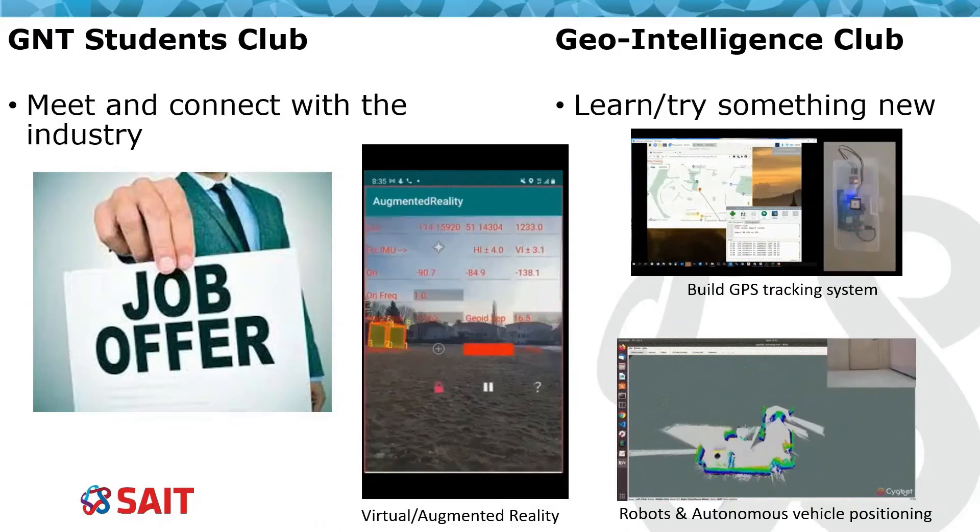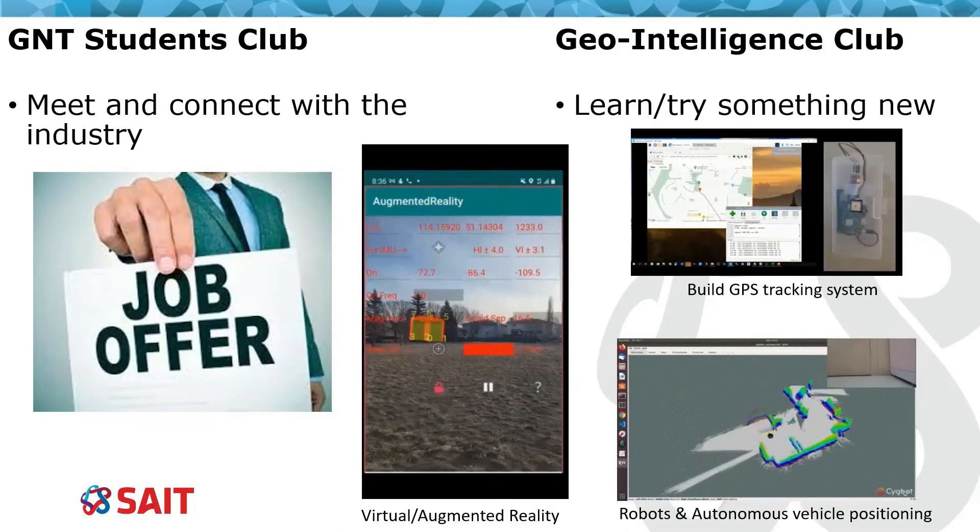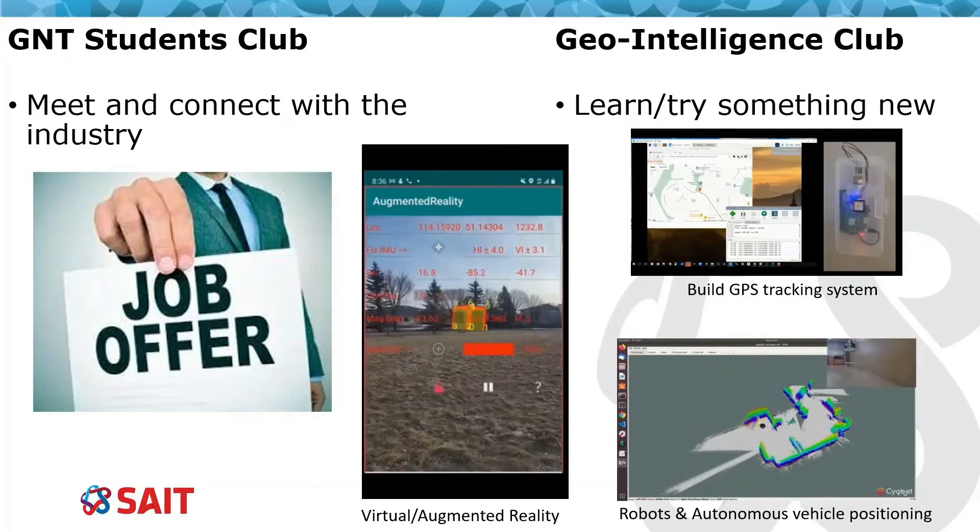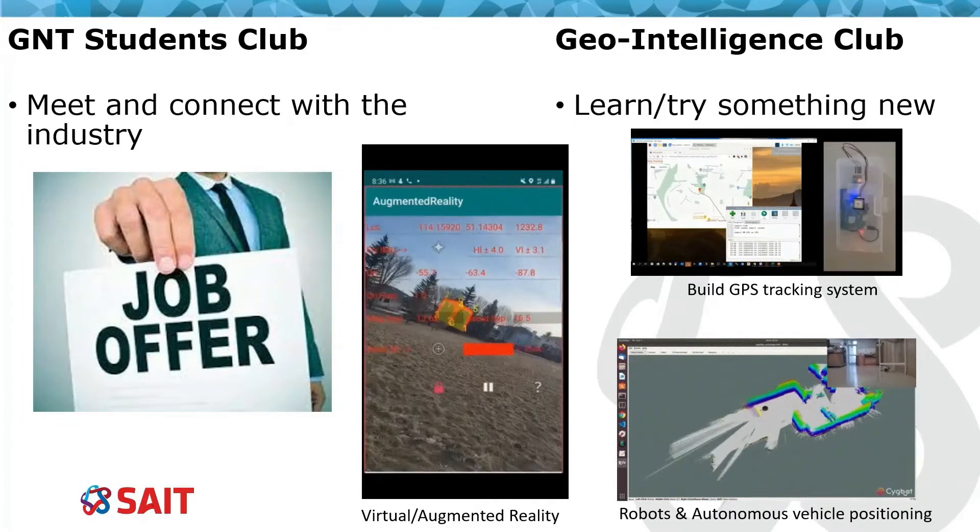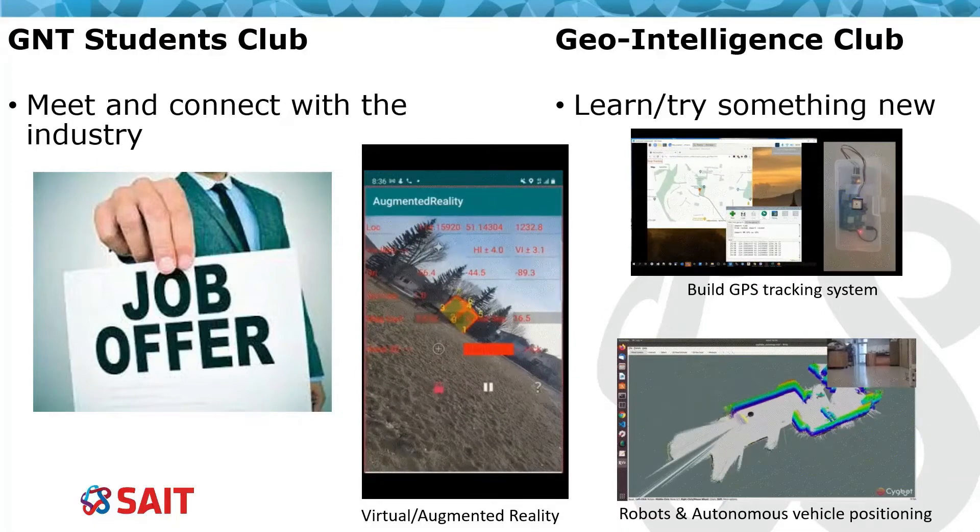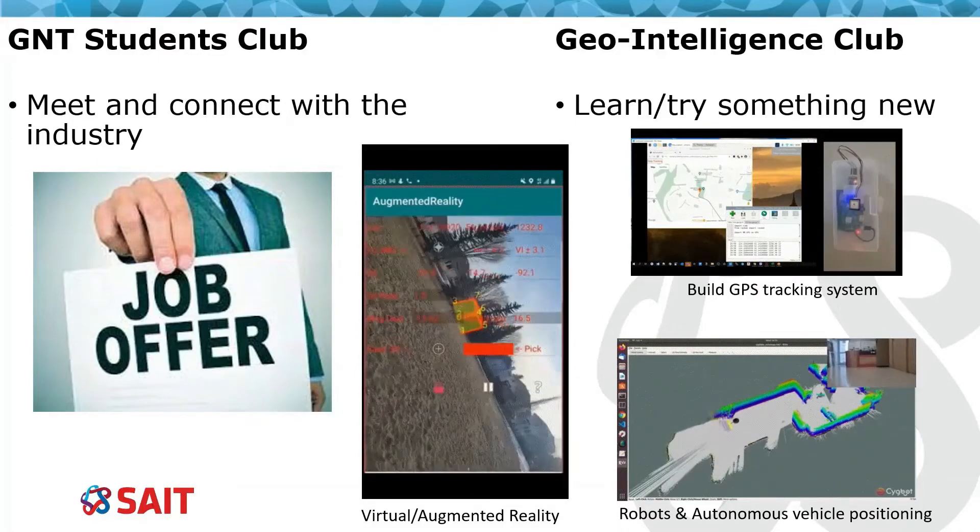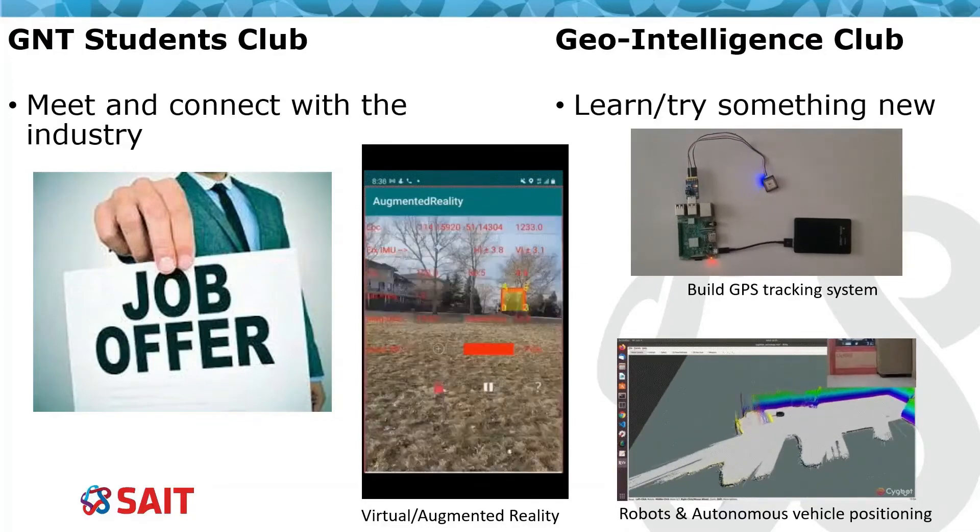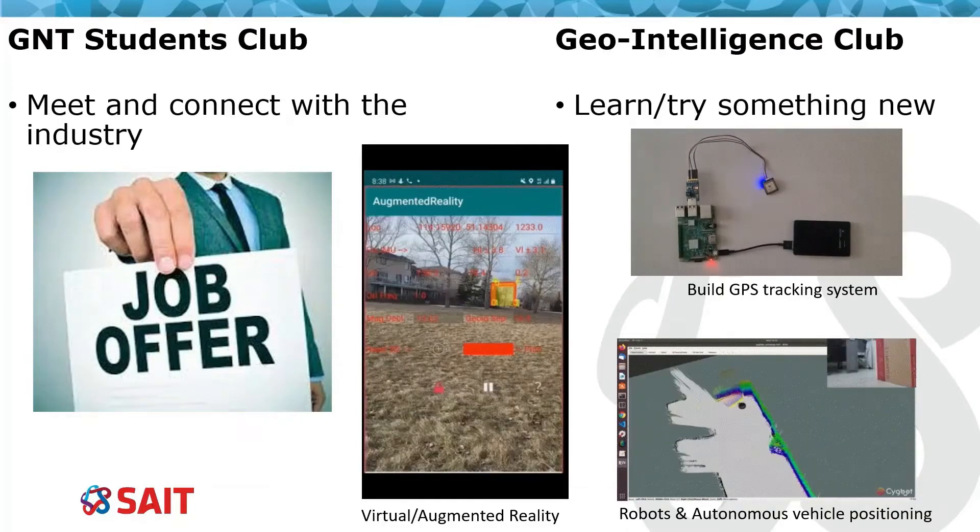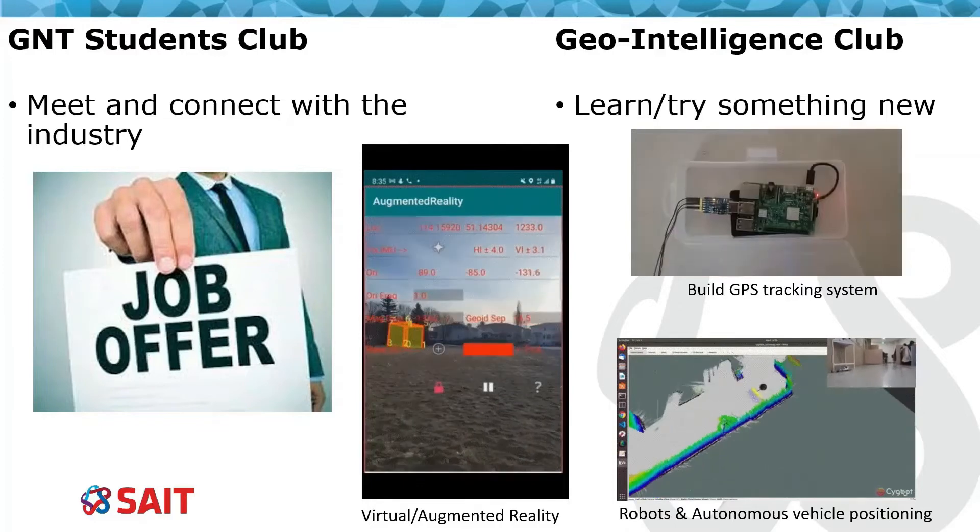Among all the clubs, I recommend you to join the GNT students club. That's where companies come to SAIT and try to meet with you when they look for geomatics professionals to hire. Sometimes they invite all students to meet with industry reps in local restaurants and pubs. You will have a good chance to get a job before you graduate, and also many students get summer jobs between year one and year two during these events.